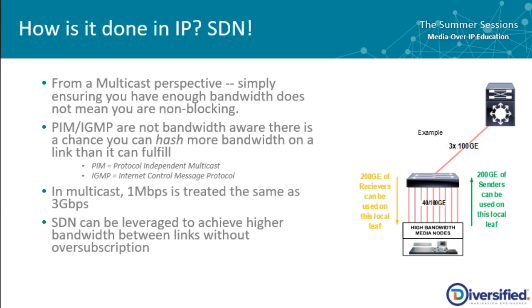PIM and IGMP are not bandwidth aware. There is a chance that you can actually hash more bandwidth onto a link than that link can fulfill, because in multicast, one megabit per second is actually treated the same as three gigabits per second in the hash algorithm. To fix this, we can leverage SDN to manage bandwidth between links so that we're not oversubscribing.